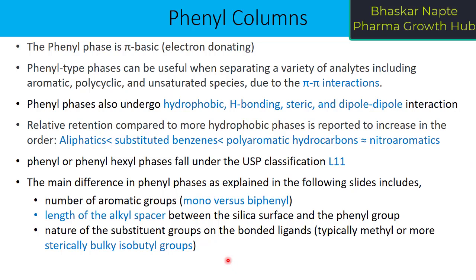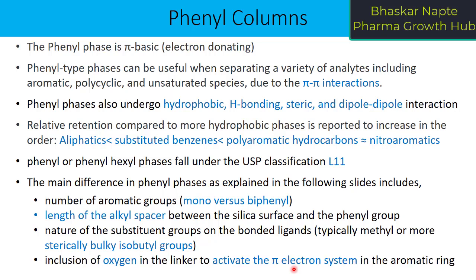Third, the nature of the substituent groups on the bonded ligands — typically methyl or more sterically bulky isobutyl groups. The phenyl ring is connected to the silicon atom by the alkyl chain, and if you want to further increase the steric hindrance of the stationary phase, you can use bulky functional groups like isobutyl groups. Fourth, inclusion of oxygen in the linker to activate the pi electron system in the aromatic ring — oxygen present in the alkyl chain increases the pi electron system, making the pi-pi interaction more efficient.